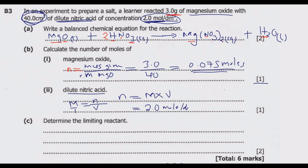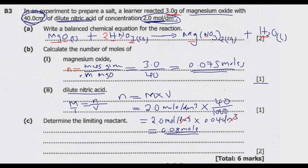So: n = 2.0 mol/dm³ × (40 cm³ ÷ 1000 cm³/dm³) = 2.0 mol/dm³ × 0.04 dm³. The dm³ units cancel, and I end up with 2.0 × 0.04 = 0.08 moles. So the number of moles of dilute nitric acid is 0.08 moles, and that earns the one mark.